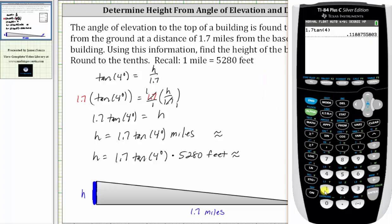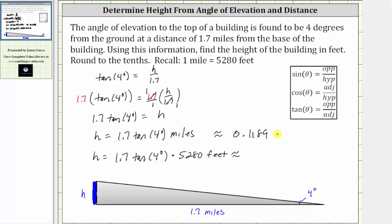which is 1.7 times tangent 4 degrees times 5,280 feet. Which to the tenths place value is 627.7 feet. So again, for our answer, the height is approximately 627.7 feet.